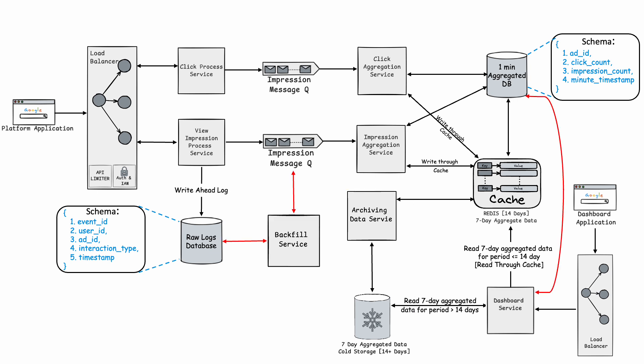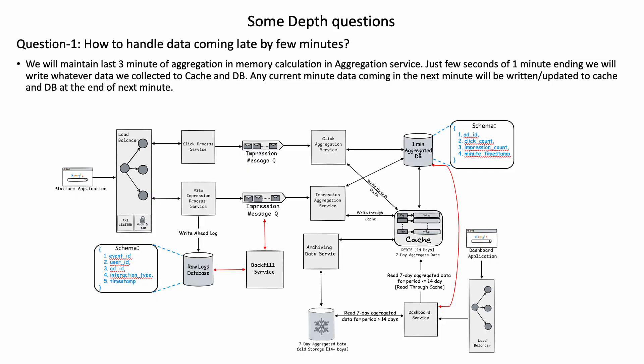Let's talk about failure scenarios. If the cache or cold storage DB fails, the dashboard service will fall back to pulling aggregation data from the 1-minute aggregated database. For any failures at the message queue or aggregation level, we rely on a backfill service that takes data from the raw logs database to bring the system back to a consistent state. The backfill service can run every 1 hour as a batch job. For late-arriving data, we maintain the last 3 minutes of in-memory aggregation — a few seconds before the 1-minute window ends we write collected data to cache and DB, and any current-minute data arriving in the next minute gets updated at the end of that next minute.